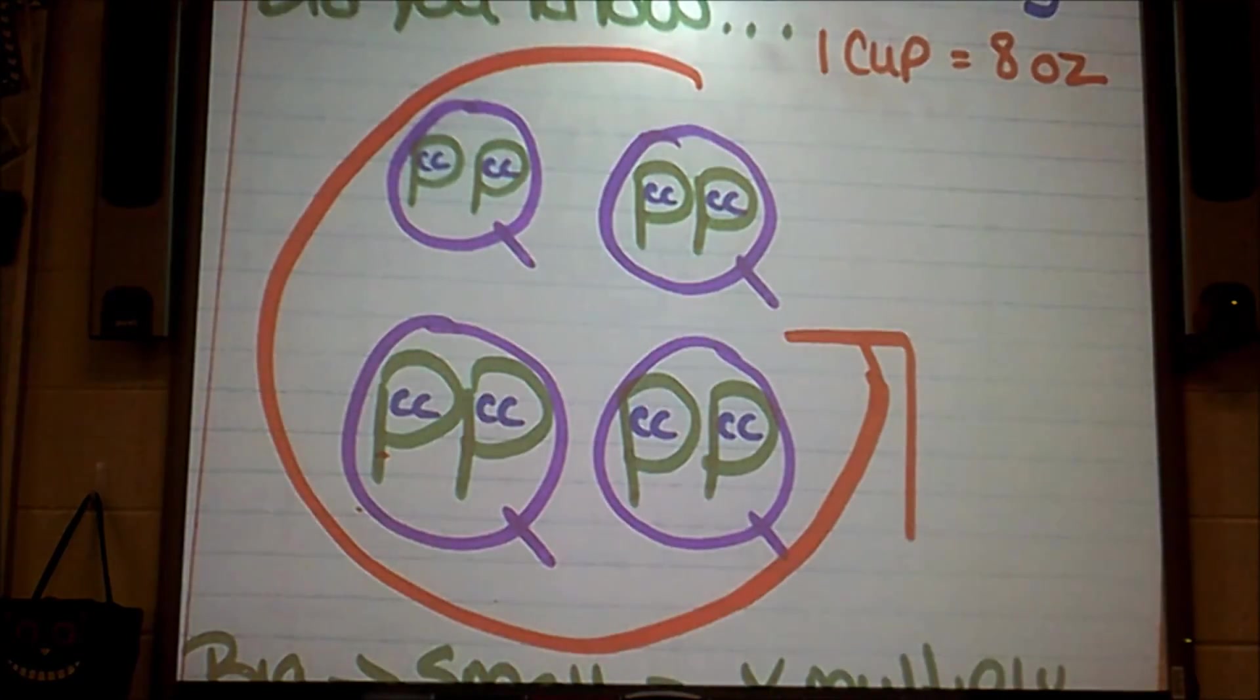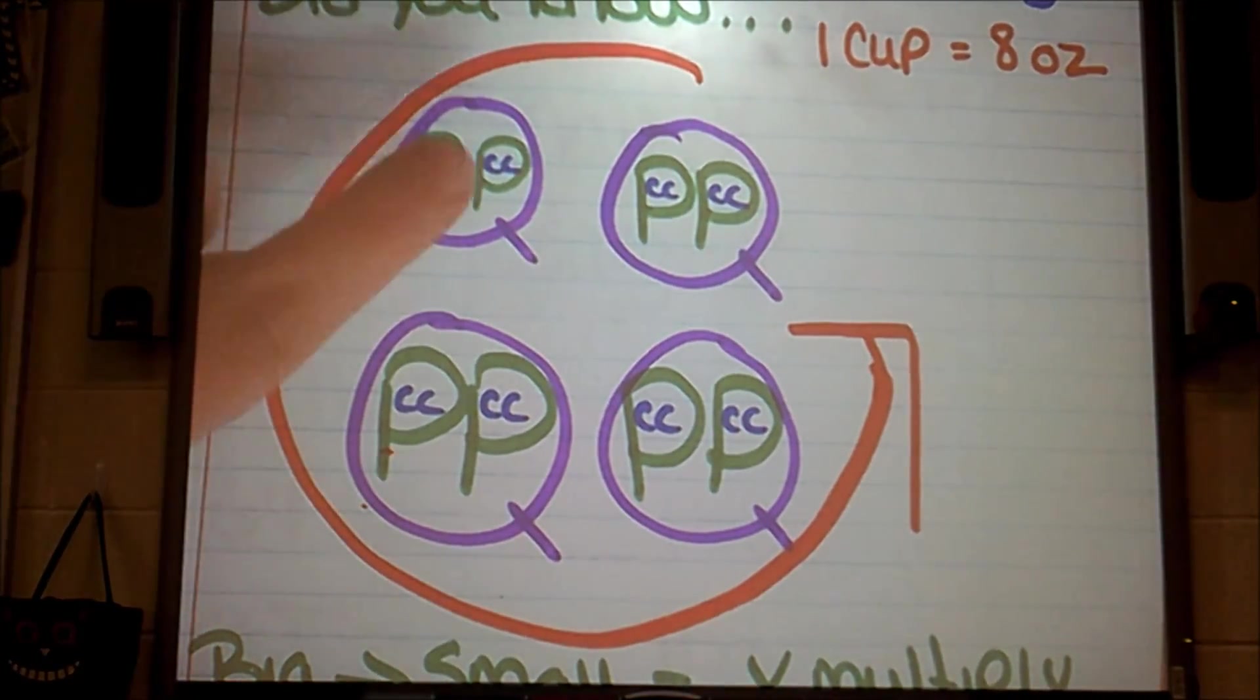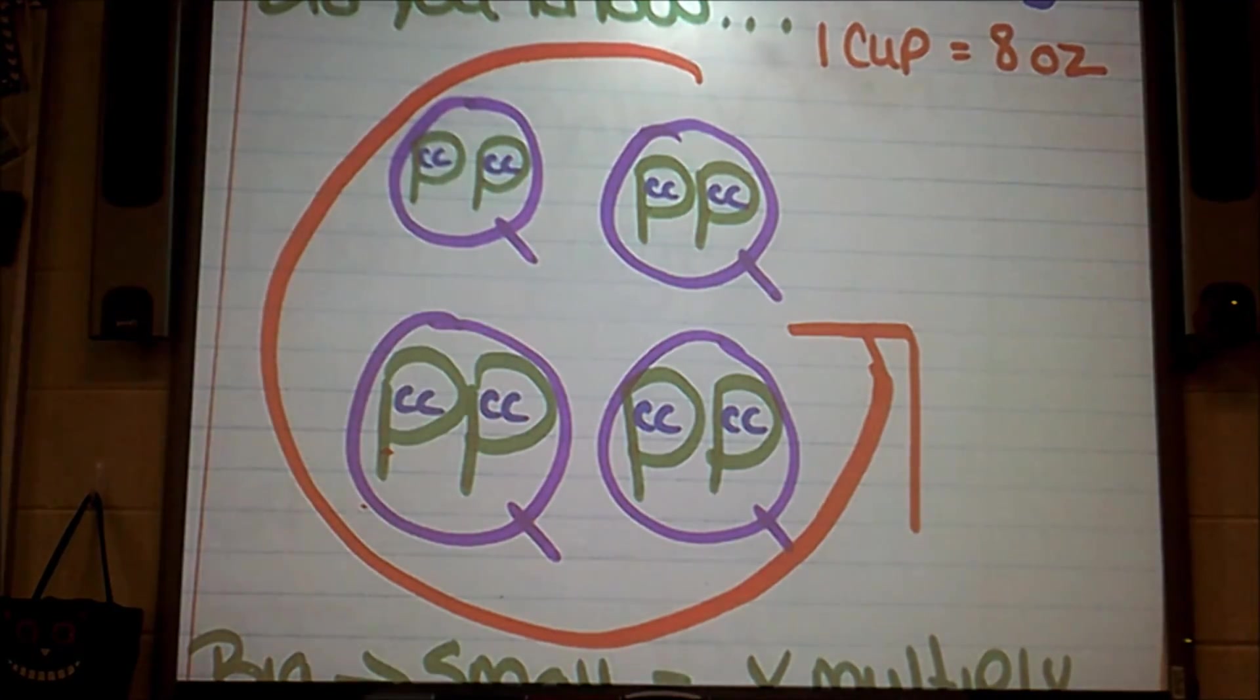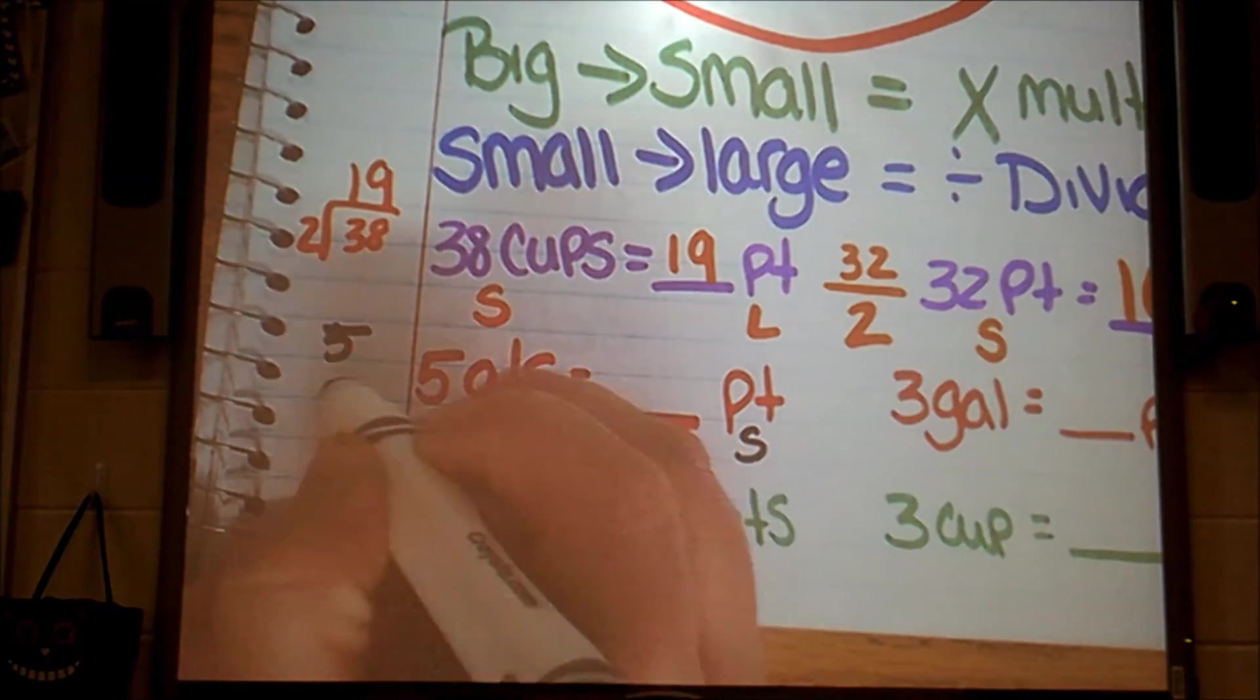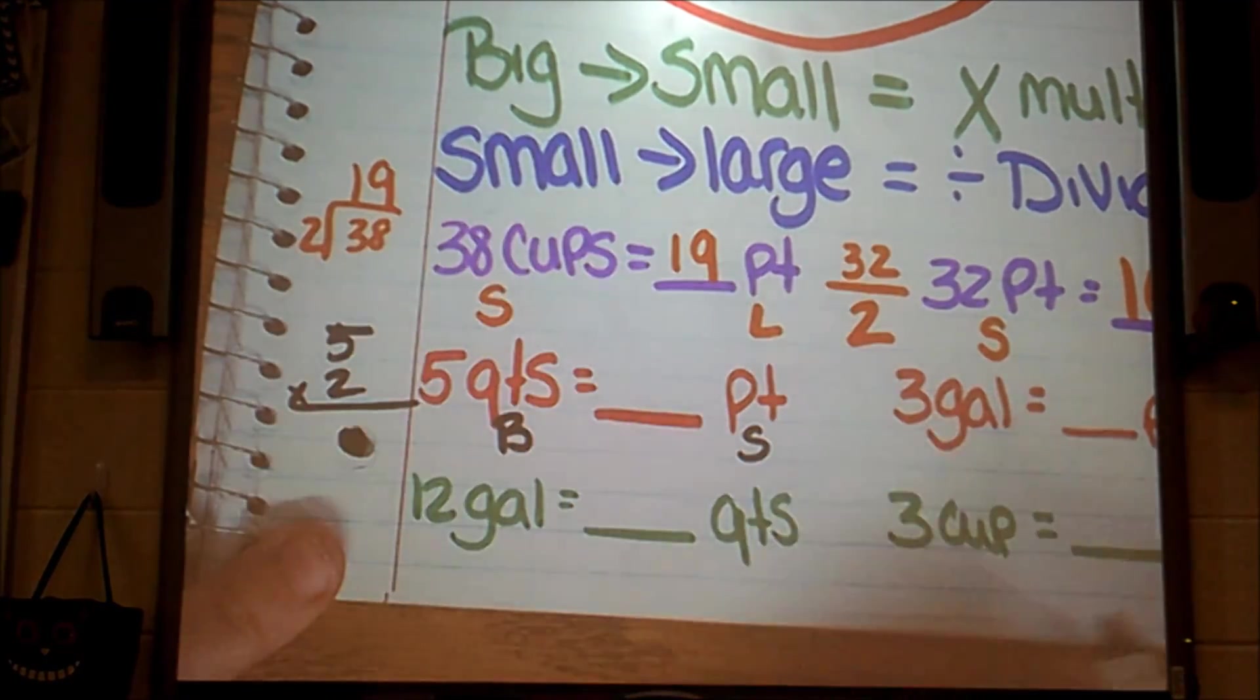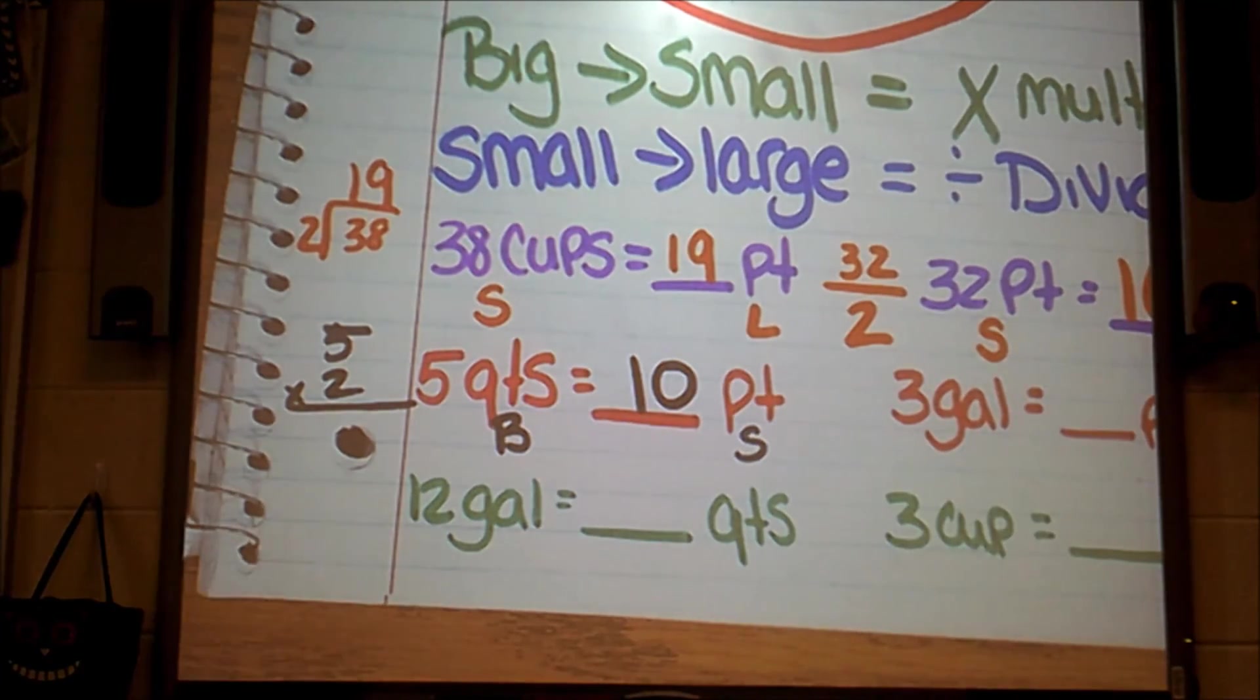Good job. So I'm going to multiply my number of quarts, my five, times how many pints are in a quart. So I look at my big G, and I determine that inside my quart, just like my last problem, I have two pints in each quart. So that means I'm going to be multiplying five times two, and it's going to give me ten pints.